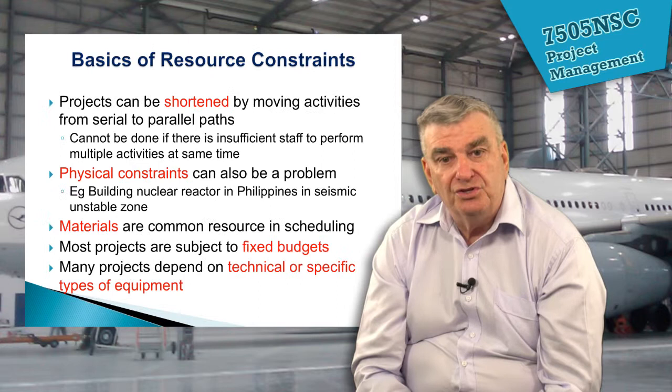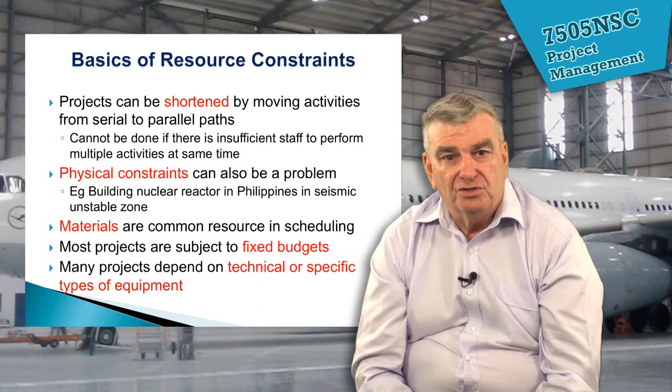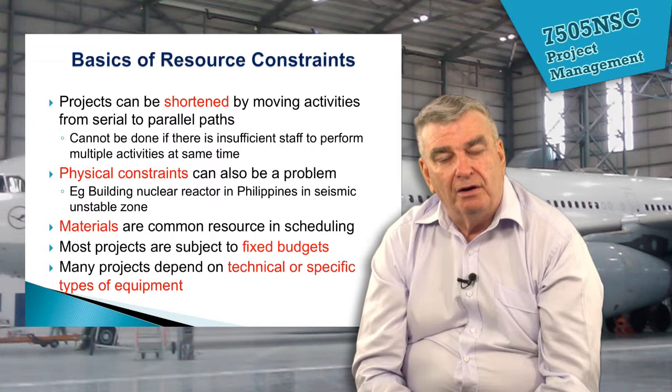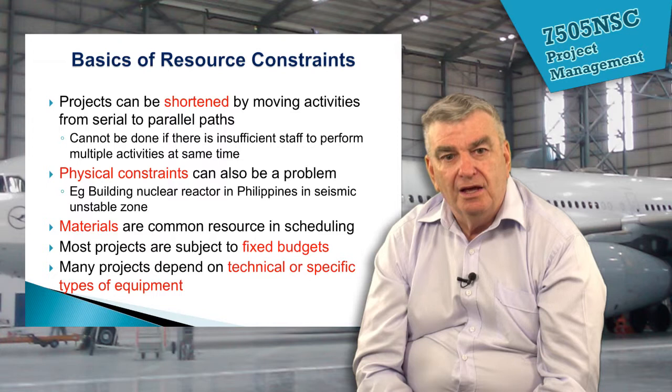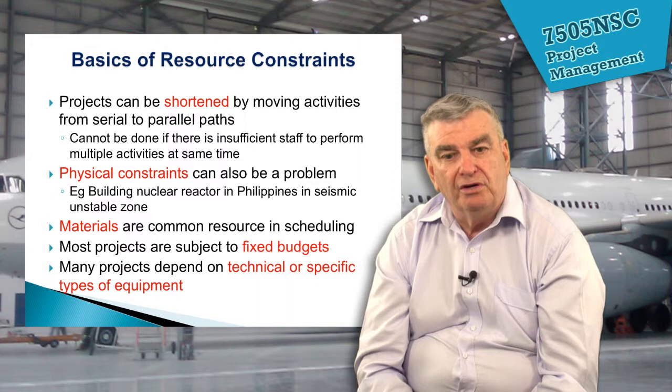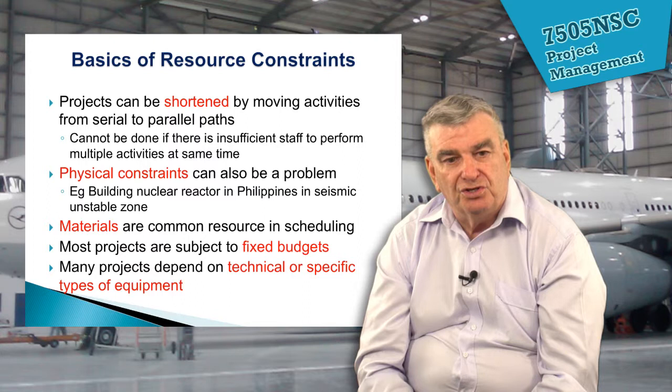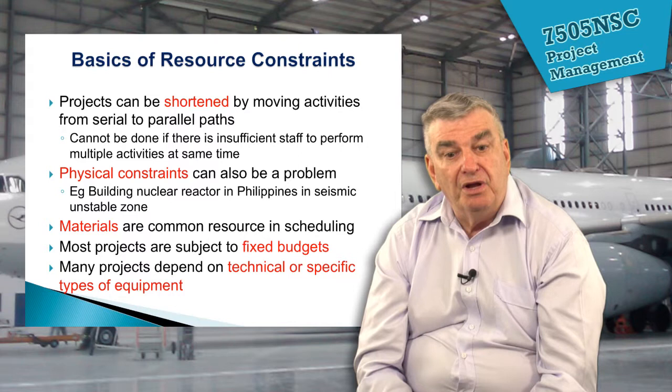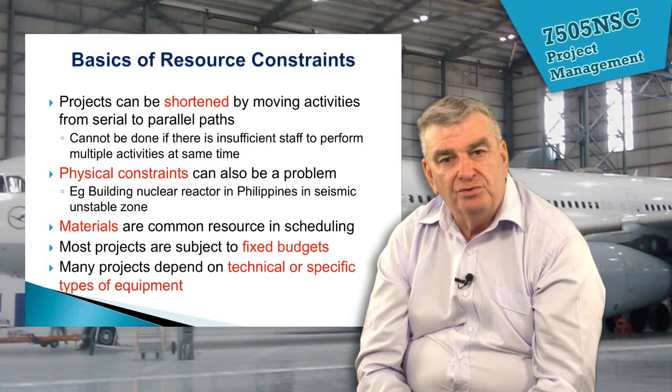We come up against the basic issue of resource constraints. Projects can be shortened by moving activities from serial to parallel paths, as we covered when we started work on project networks. But there are also physical constraints — materials, for example, are a common problem and are sometimes not available when needed. Most projects are subject to fixed budgets, so underestimation causes problems. Many projects also depend on technical or specific types of equipment, and problems with those can cause blowouts in the schedule.